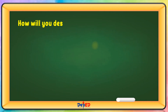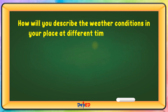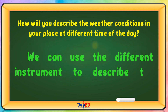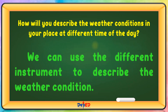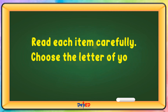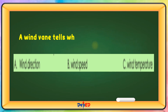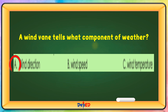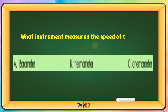How will you describe the weather conditions in your place at different times of the day? We can use the different instruments to describe the weather condition. Let's do this — read each item carefully and choose the letter of your answer. A wind vane tells what component of weather? The correct answer is A — wind direction. What instrument measures the speed of the wind? The answer is C — anemometer.